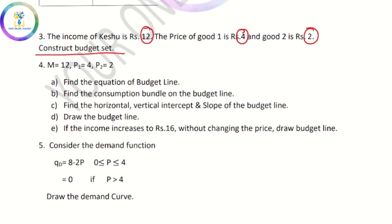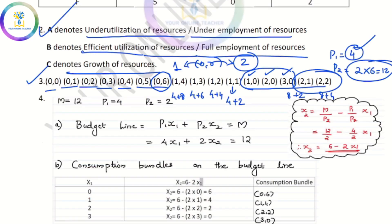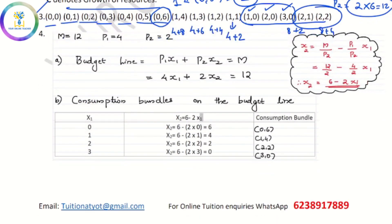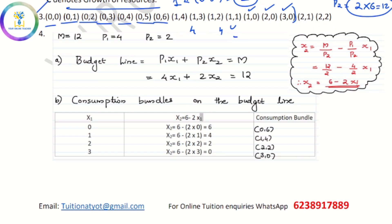The important thing is m, p1 and p2. I will find a budget line equation. The budget line equation is p1x1 plus p2x2 equal to m. That is p1 equal to 4, p2 equal to 2, m equal to 12. So 4x1 plus 2x2 equal to 12. That is the budget line equation.